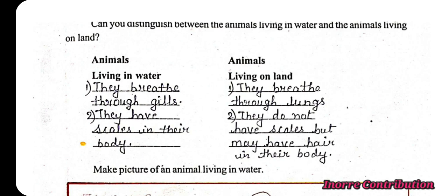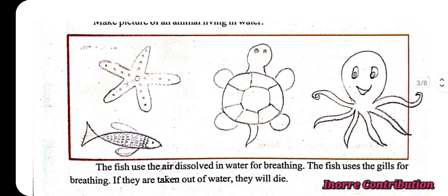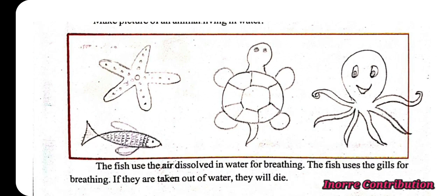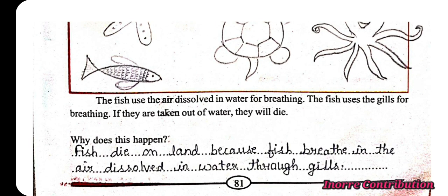In the same way, animals living on land — we have hairs on our body mainly. Fish use the air dissolved in water for breathing through their gills. If they are taken out of water, they will die.